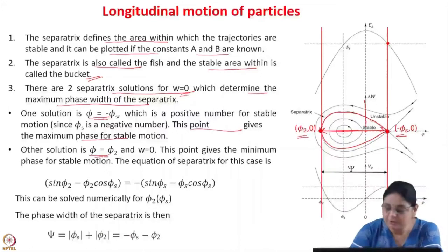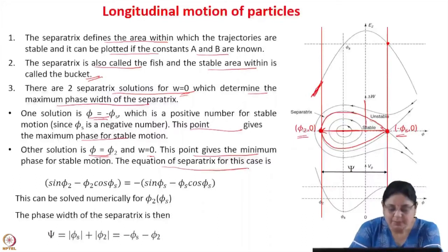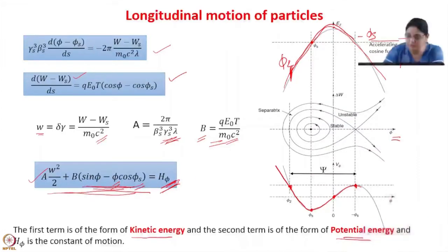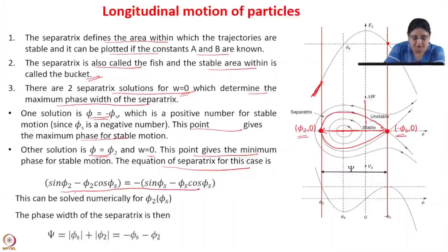The other solution is phi equal to phi 2, and this point at w equal to 0 gives the minimum phase for stable motion — any particle with a phase below this will execute unstable motion. The equation of the separatrix is obtained by substituting the point w equal to 0, phi equal to minus phi s to calculate h(phi), and then substituting phi equal to phi 2, w equal to 0. From this expression phi 2 can be numerically solved, and we see that phi 2 is a function of phi s.